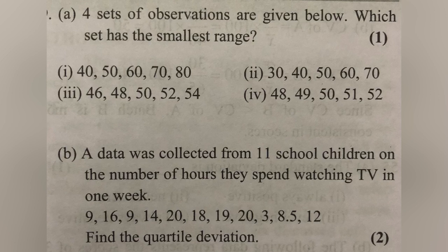Question B: data was collected from 11 school children on the number of hours they spent watching TV in one week. The data is collected and we calculate the quartile deviation using Q1 and Q3, with the formula QD equals Q3 minus Q1 divided by 2.